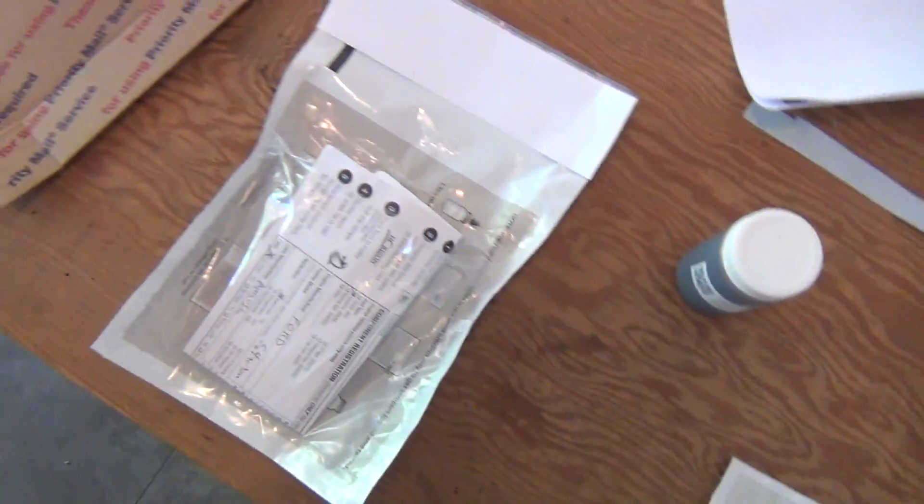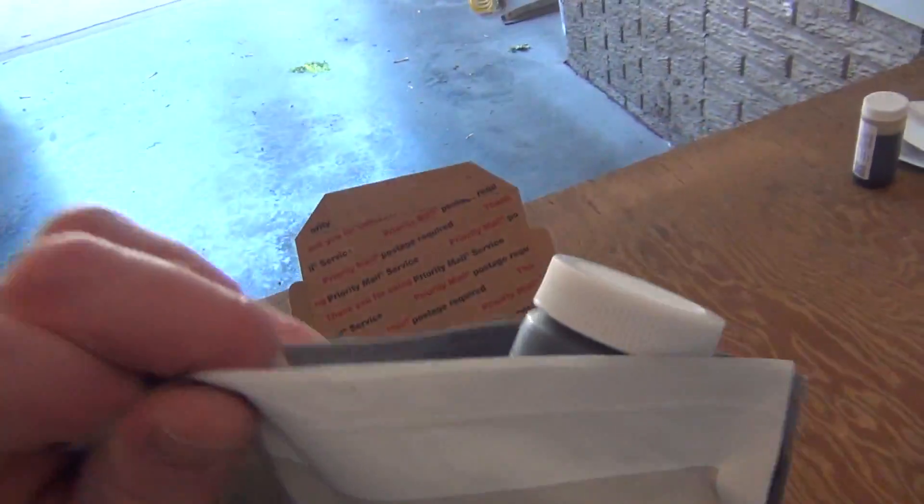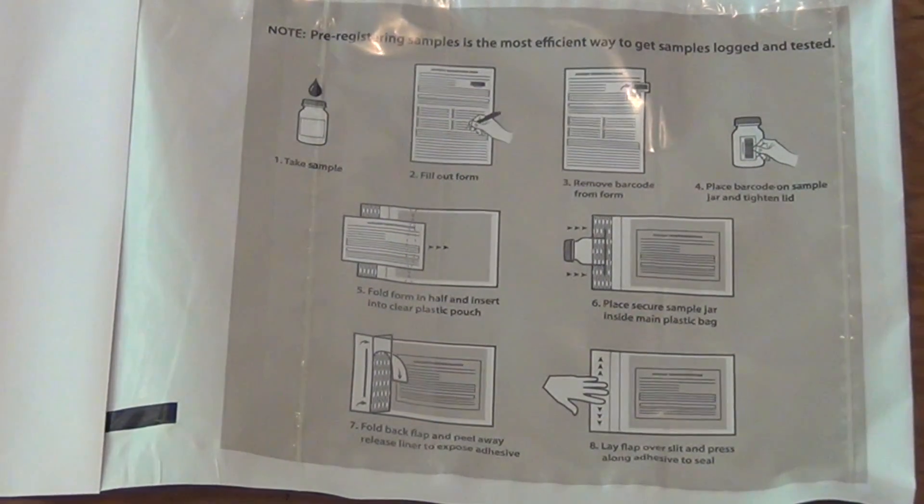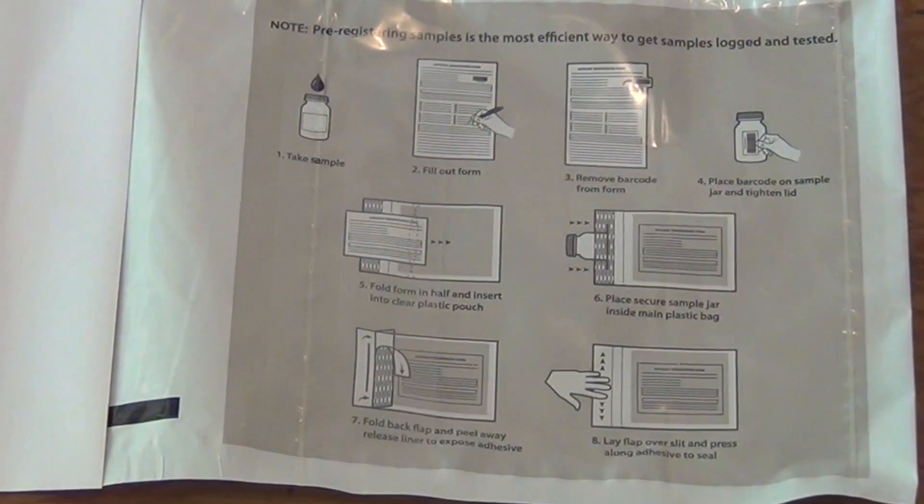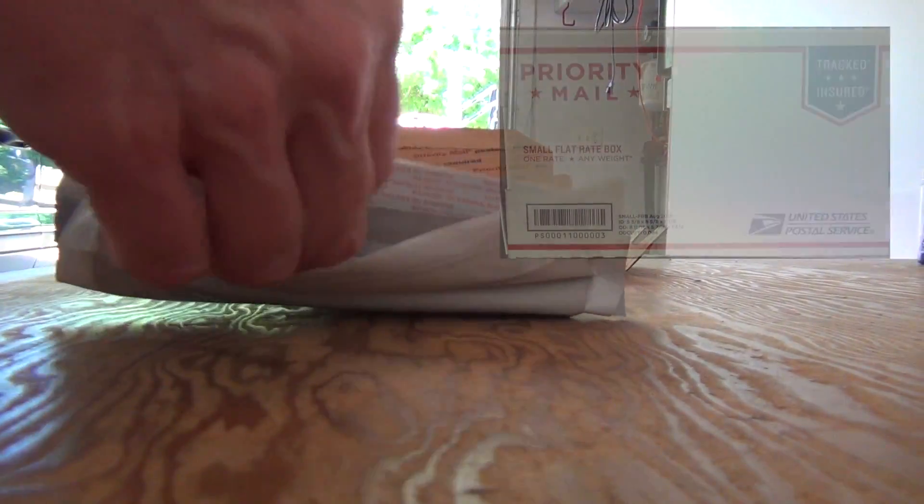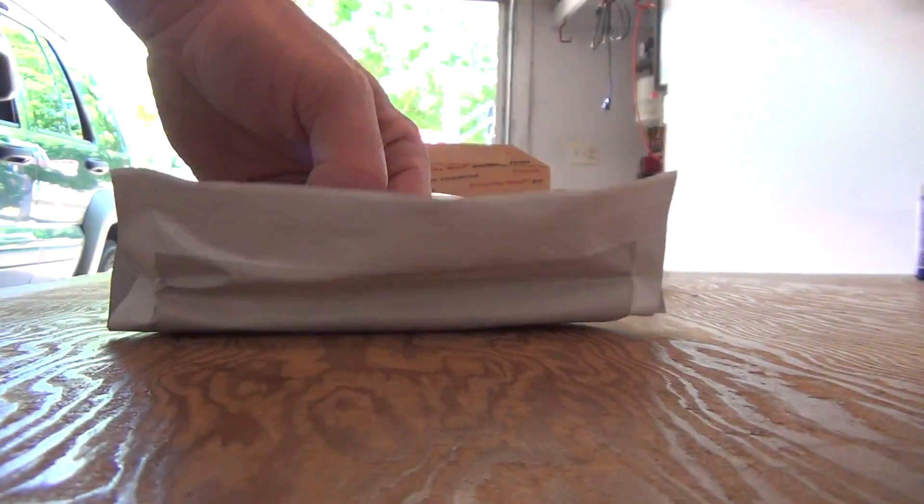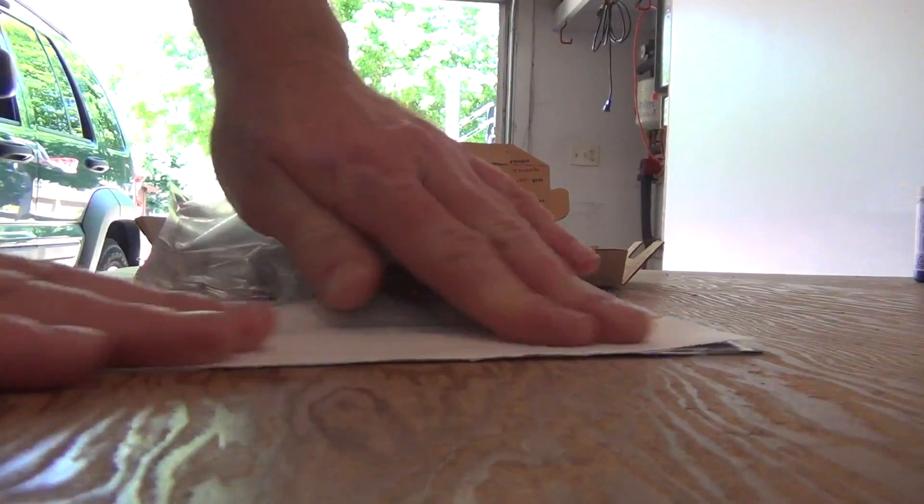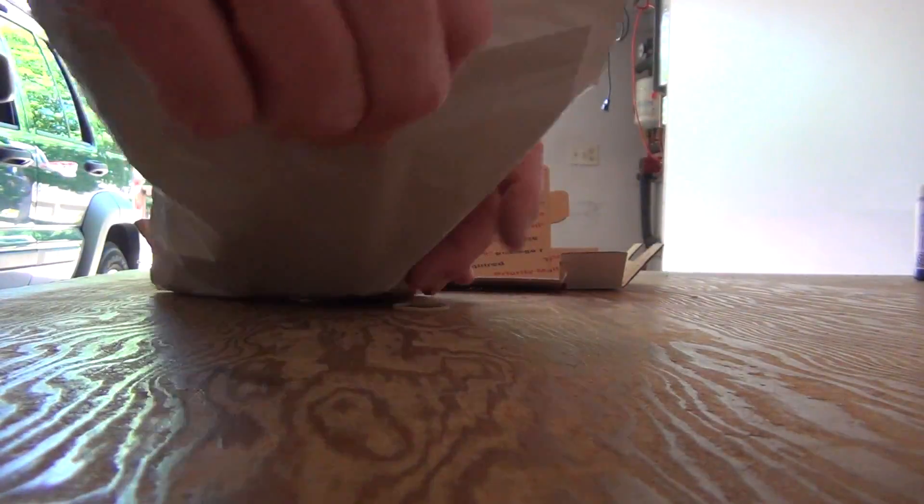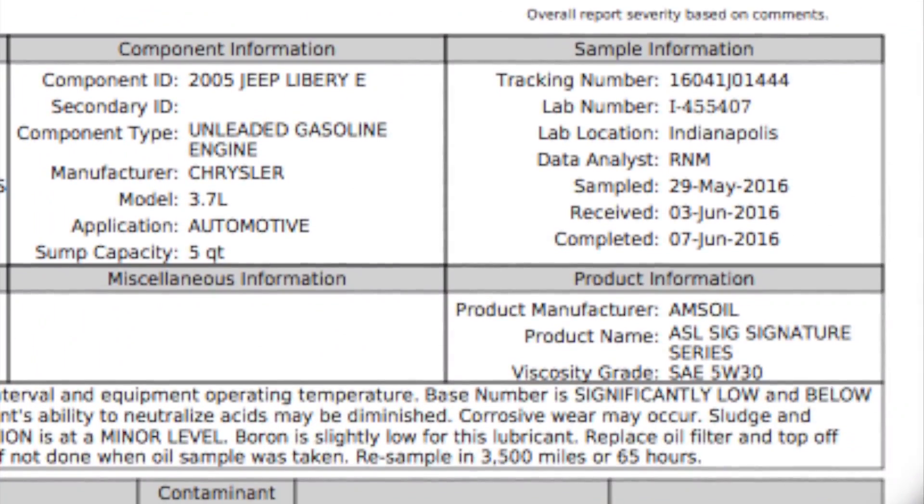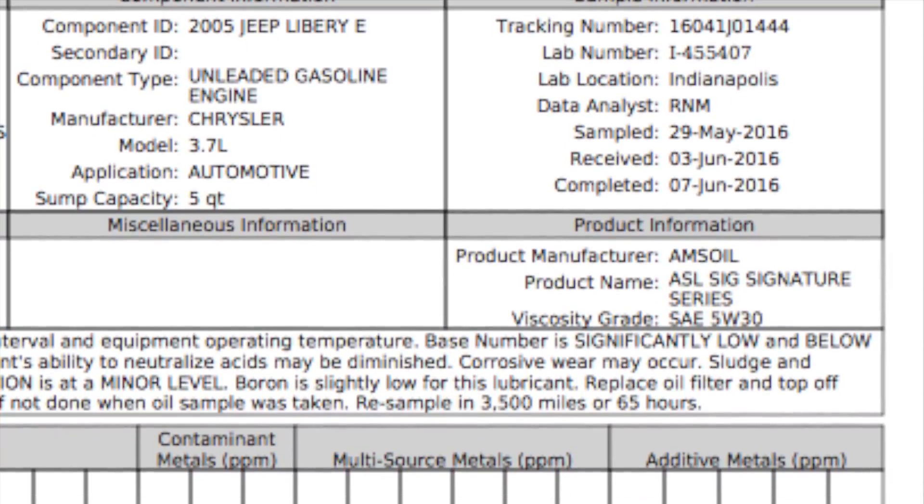The information sheet goes in the pocket and the bag. The bottle goes into the sealed bag. Instructions are included. Send to one of the oil analyzer's labs using your favorite method. Here I'm using a USPS small flat rate box for two samples.